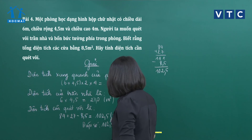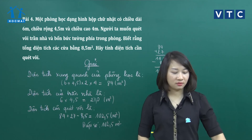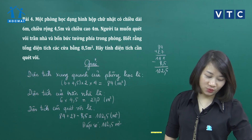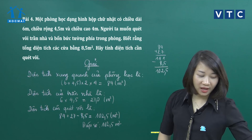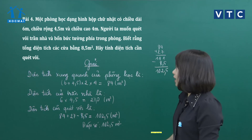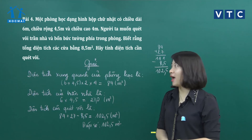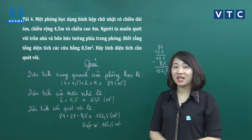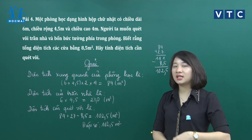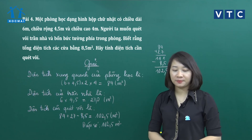Với bài toán này, bạn nào có sức tưởng tượng về không gian thì làm dễ hơn. Còn những bạn chưa có thì cần suy nghĩ xem diện tích quét vôi bao gồm những phần diện tích nào trong hình hộp chữ nhật để áp dụng công thức cho chính xác.